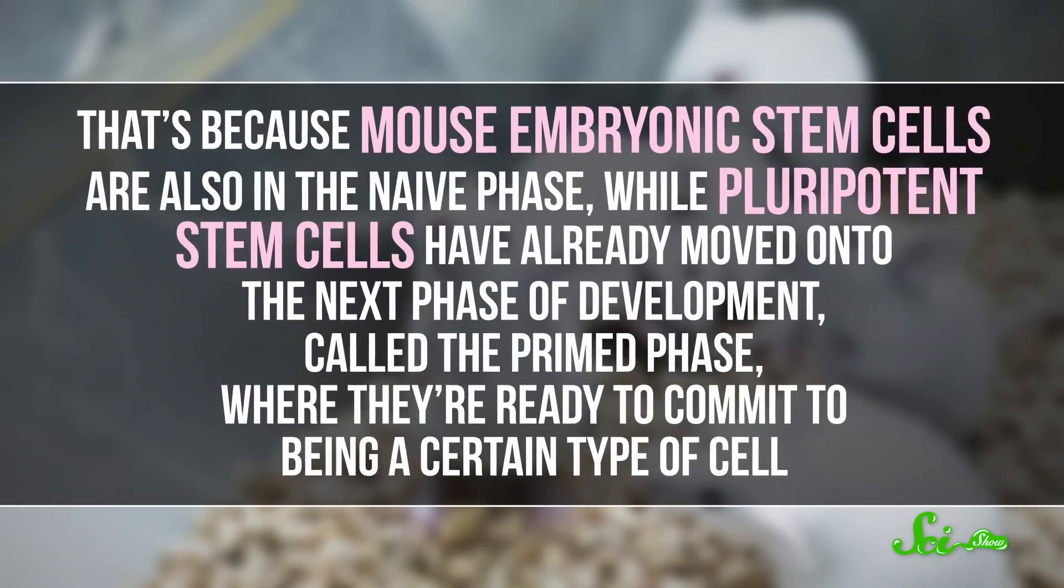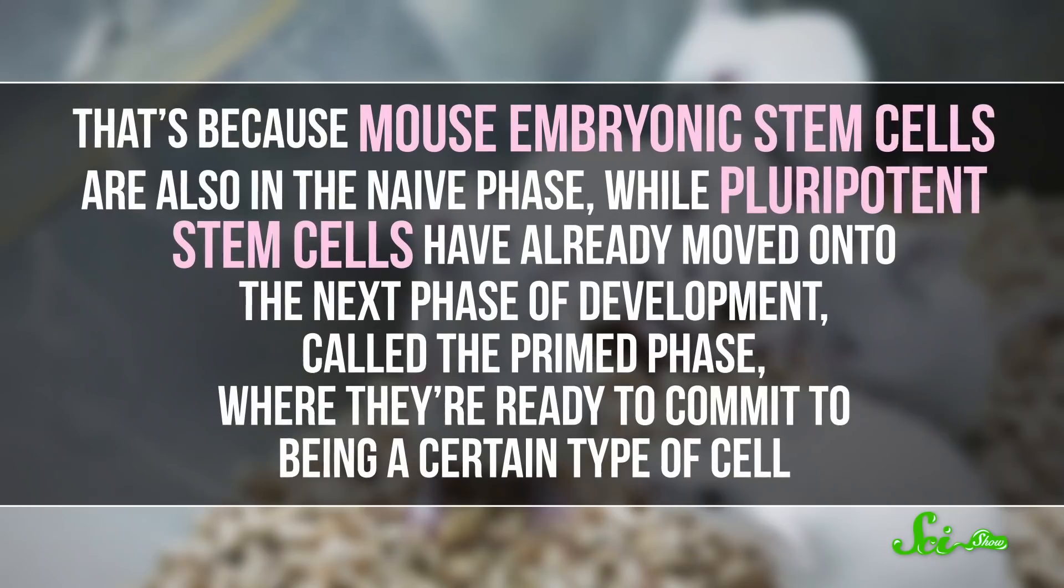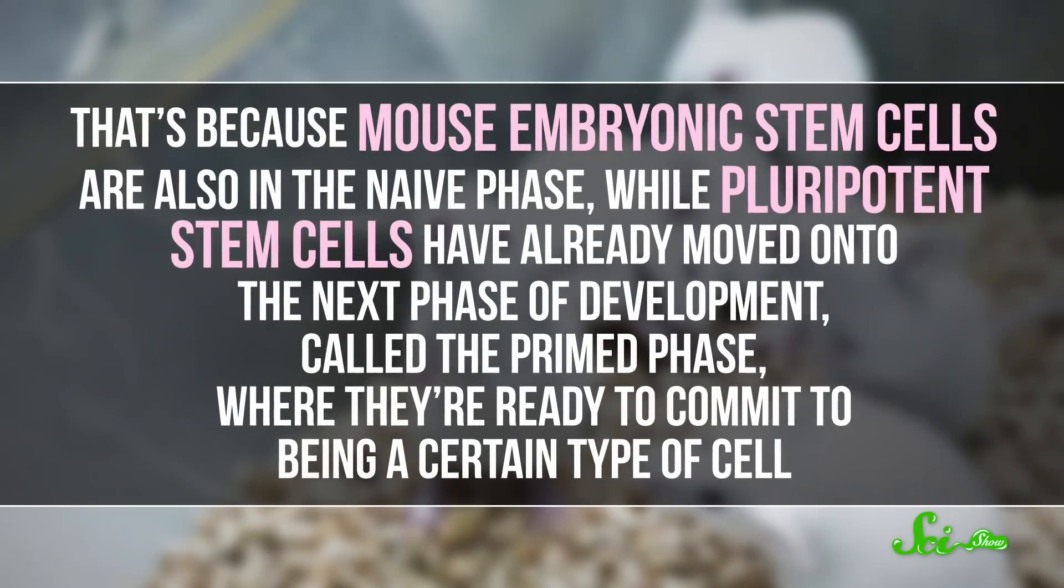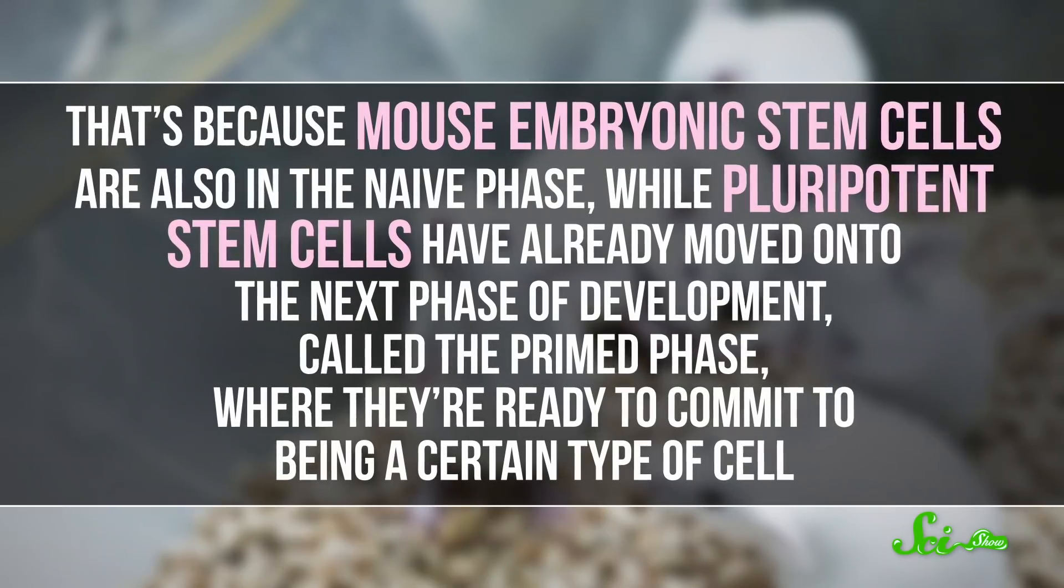That's because mouse embryonic stem cells are also in the naive phase, while pluripotent stem cells have already moved on to the next phase of development, called the primed phase, where they're ready to commit to being a certain type of cell. And in order for the human stem cells to grow effectively, they needed to match the stage of the mouse embryo.